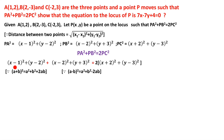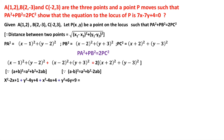Expanding each term: (x - 1)² = x² - 2x + 1; (y - 2)² = y² - 4y + 4; (x - 2)² = x² - 4x + 4; (y + 3)² = y² + 6y + 9. On the right side, 2 times: (x + 2)² = x² + 4x + 4; (y - 3)² = y² - 6y + 9.